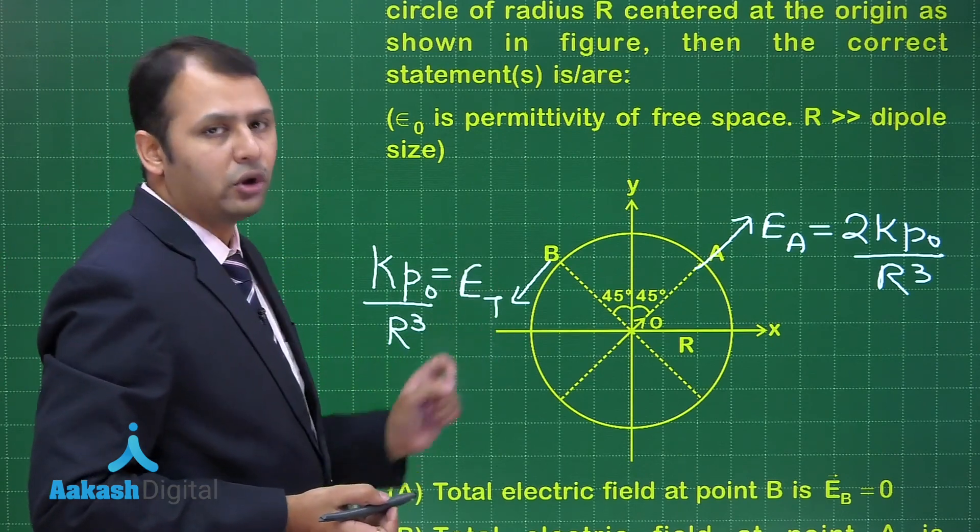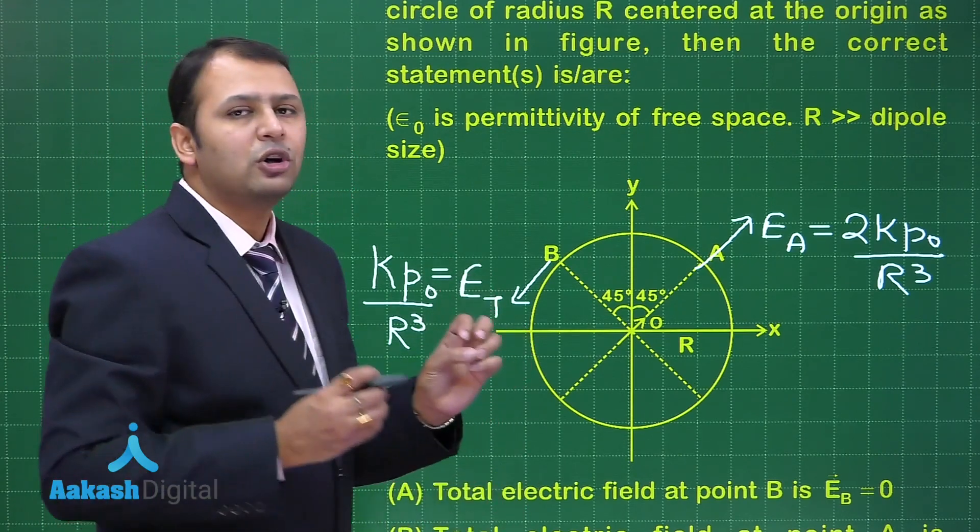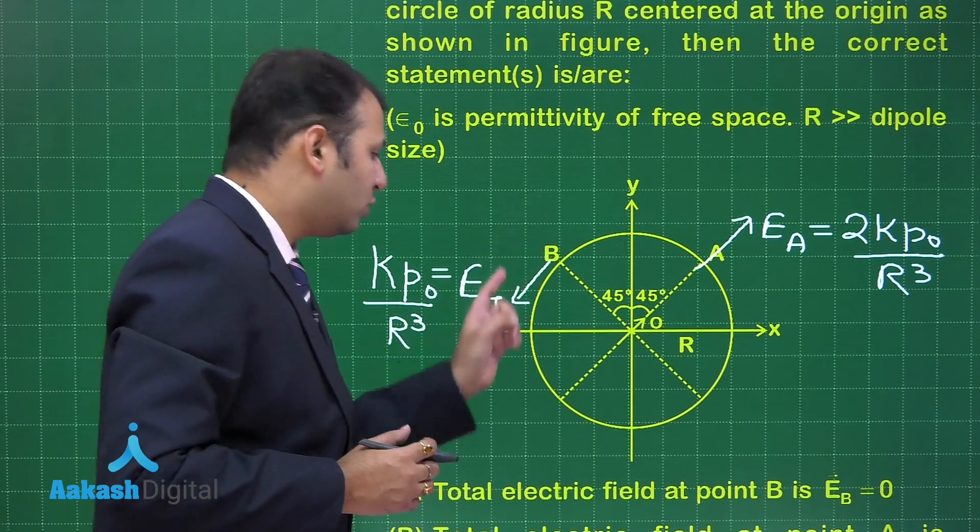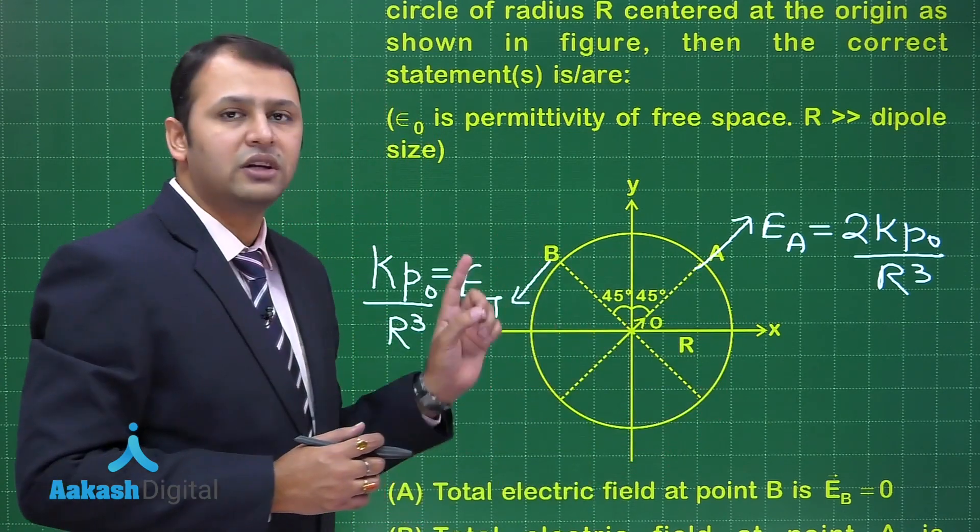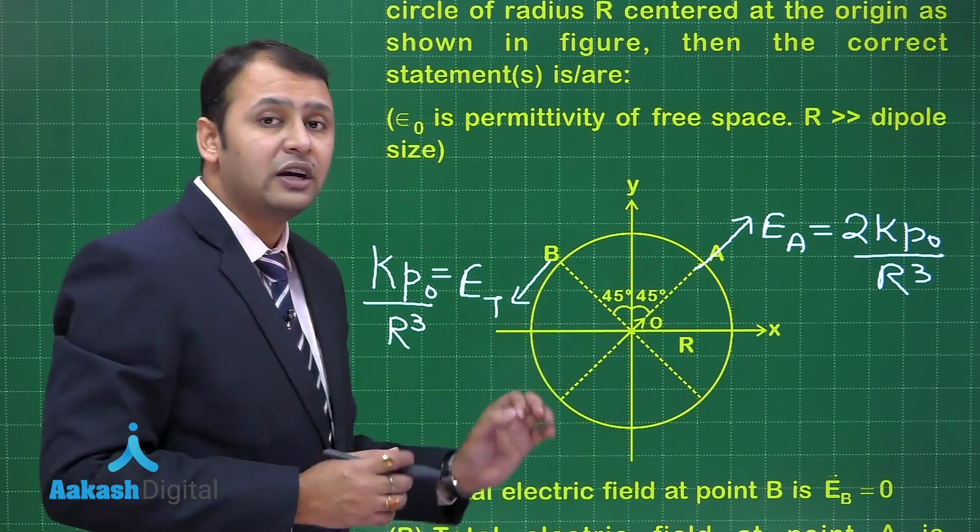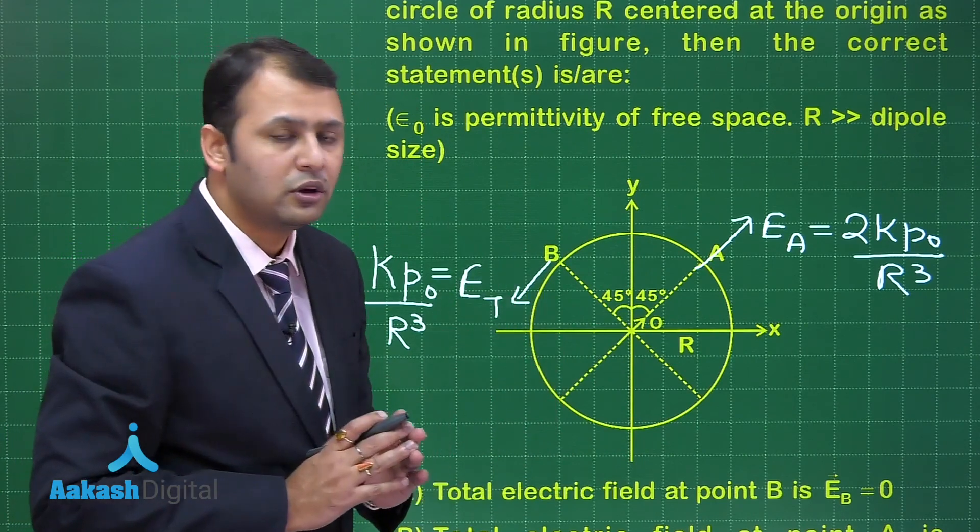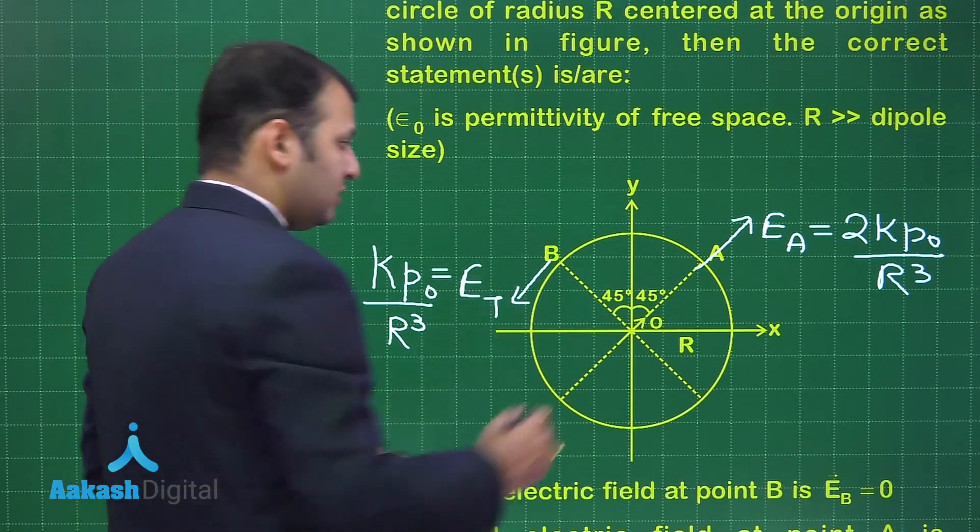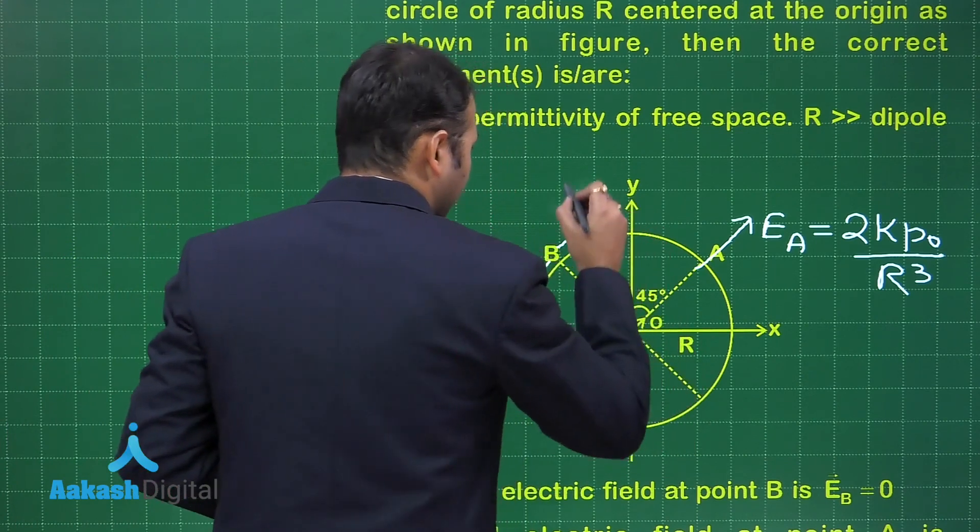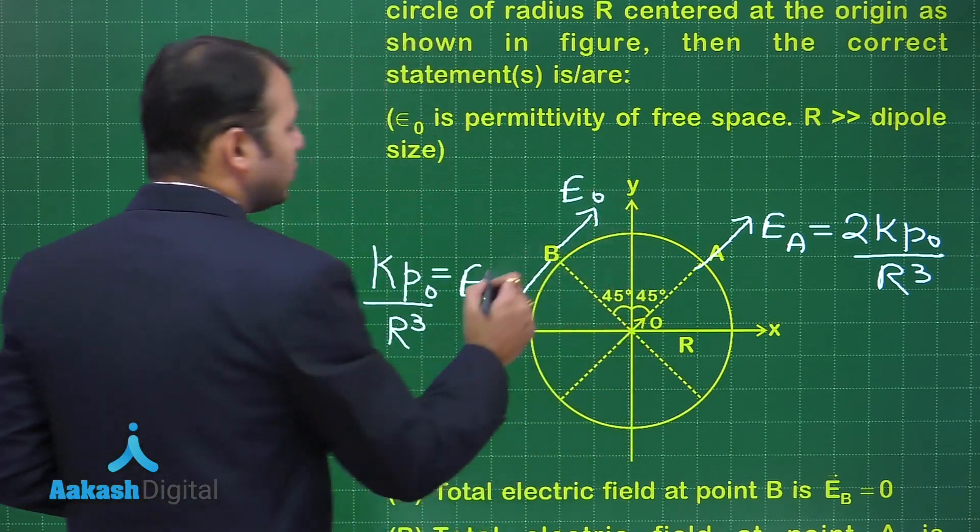Now when you want to talk about E₀, the very first important observation is that if we want same potential at every point of the ring, the tangential component of electric field at every point should be 0. In order to achieve that here, E₀ should be in this direction.